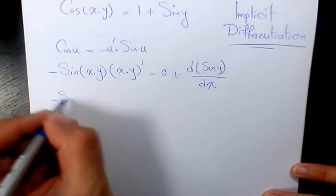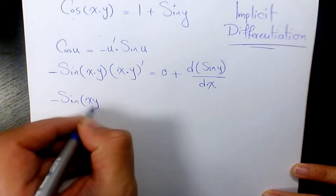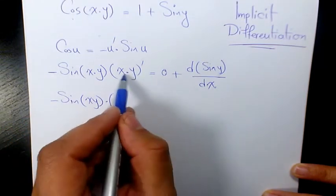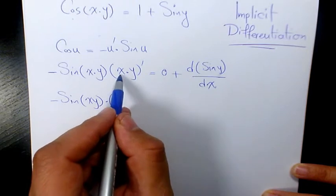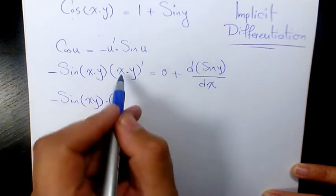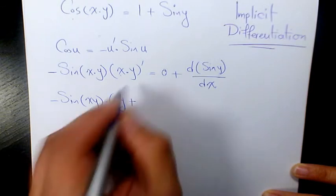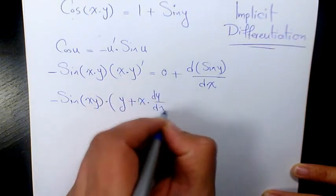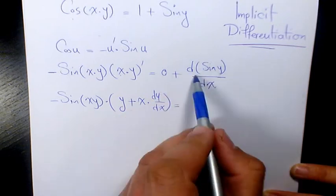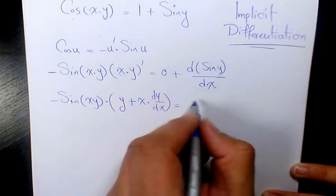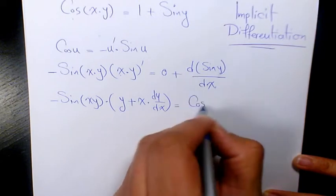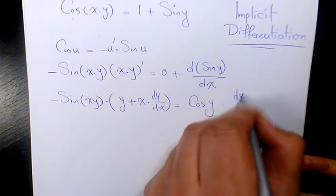So it's going to be negative sine xy times, here we need to use the product rule, it's going to be the derivative of x which is 1 times y, so y plus x times the derivative of y which is dy over dx, equals the derivative of sine y, that's going to be cosine y times dy over dx.